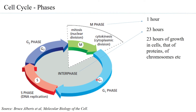In those 23 hours, the cell grows — not just in size, but also in terms of number of proteins, chromosomes, and other components. Everything needed for the mitotic stage is prepared during interphase, because the M phase is dedicated only to division. During M phase there is no gene expression, no protein formation, no chromosome duplication — only division. Every necessary thing required for M phase must be prepared during interphase, which is why interphase is much longer than the M phase.